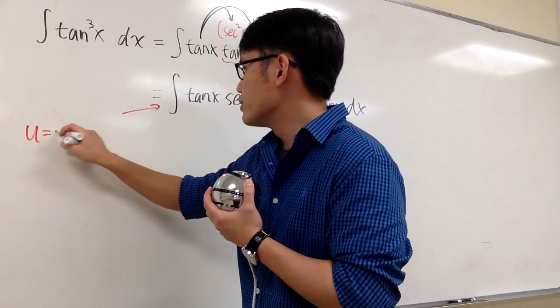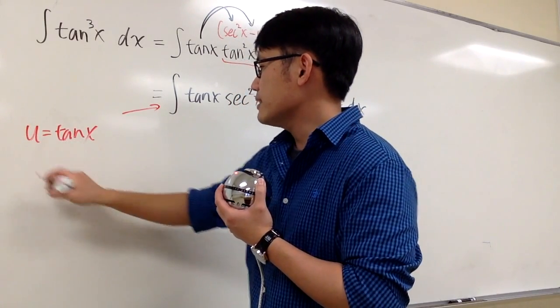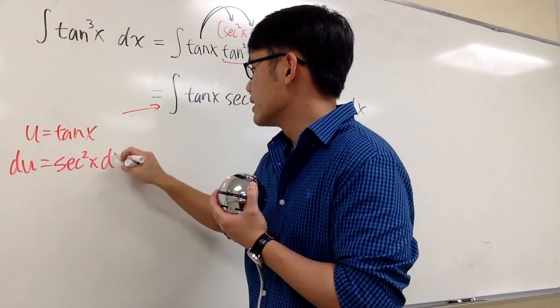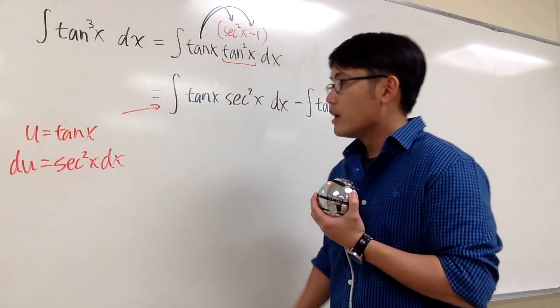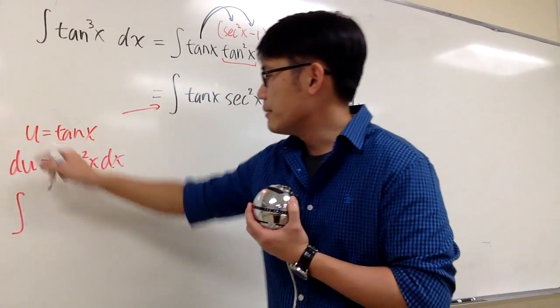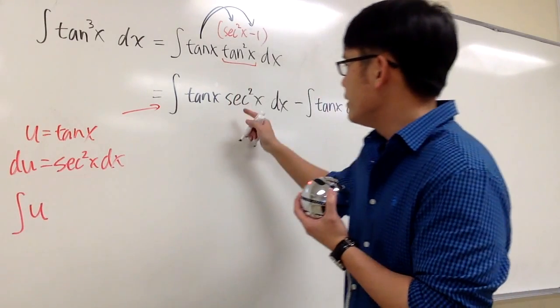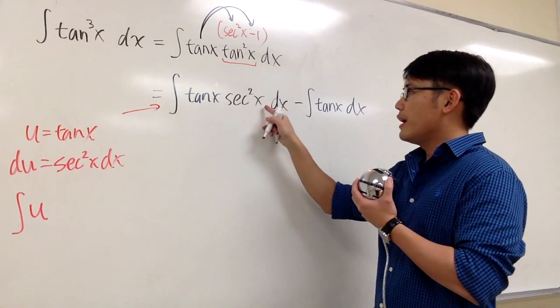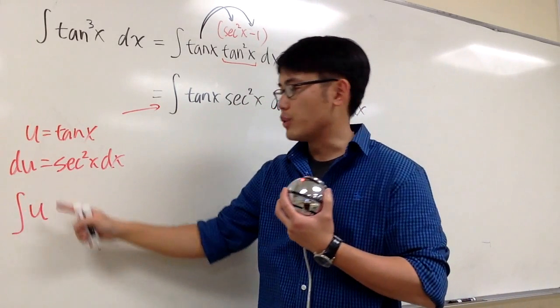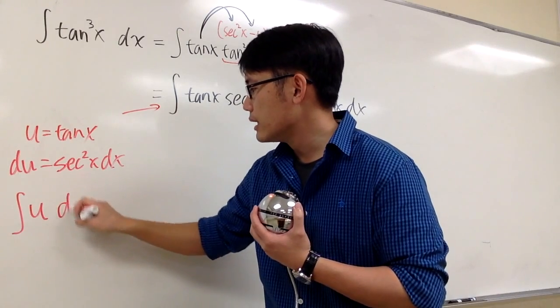So right here, I will just say that u equals tangent x, and of course, du will be secant squared x dx. So for this integral, it's just going to be tangent x is the same as my u right here. And then if you look at this part, secant squared x dx, that matches exactly the du. So we just need to integrate u du.